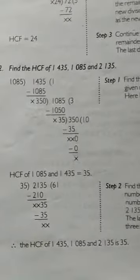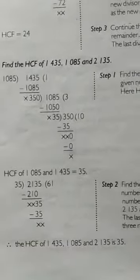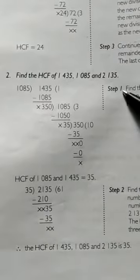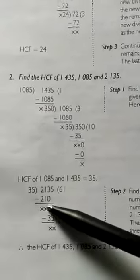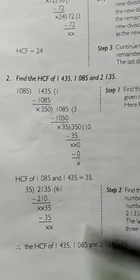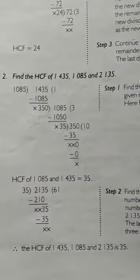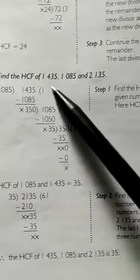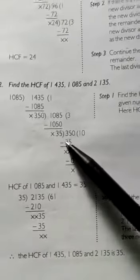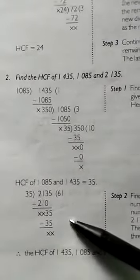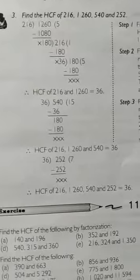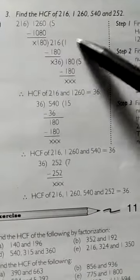To summarize the method for three numbers: find the HCF of the first two numbers, then find the HCF of that result and the remaining third number. The final result is the HCF of all three given numbers.